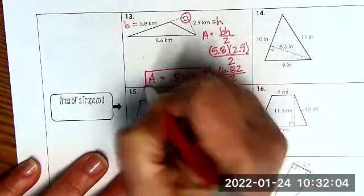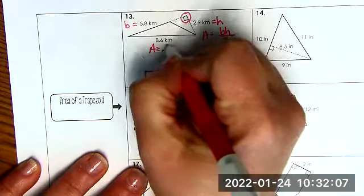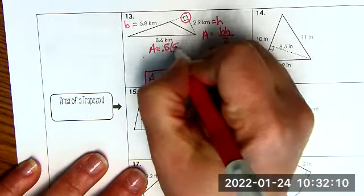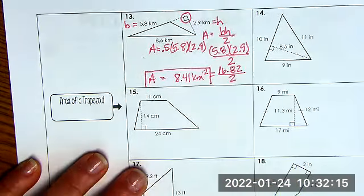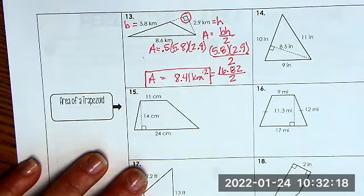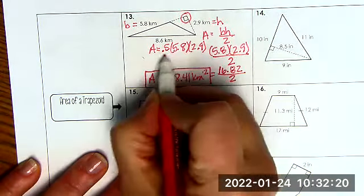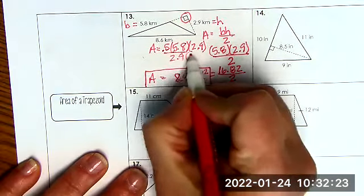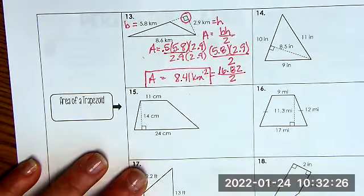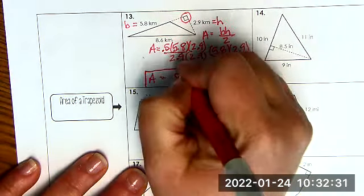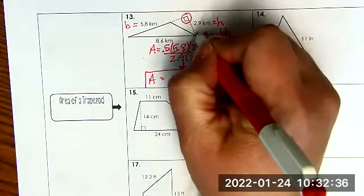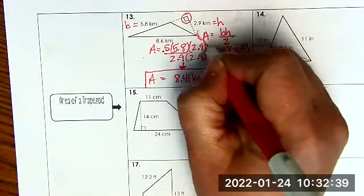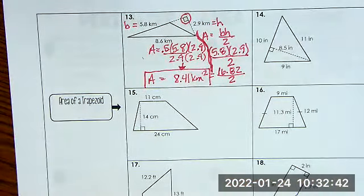Now, real quick, you can also work this as one half is the same as 0.5, correct? So I can do 0.5 times 5.8 times 2.9. And when I do that, we get 8.41. Just so you can see that there is more than one way to work this problem.